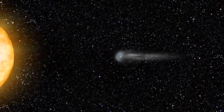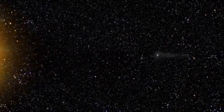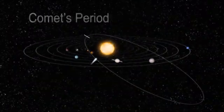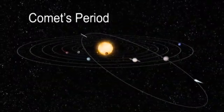But comets are very dark and hard to see when they aren't near the sun. The time between one visit near the sun and the next is called the comet's period.